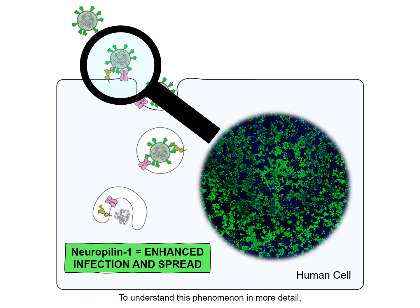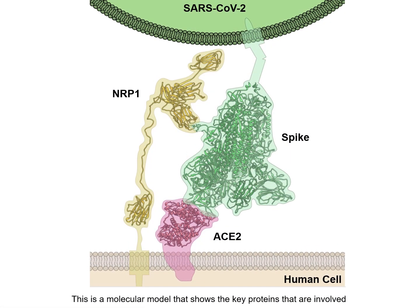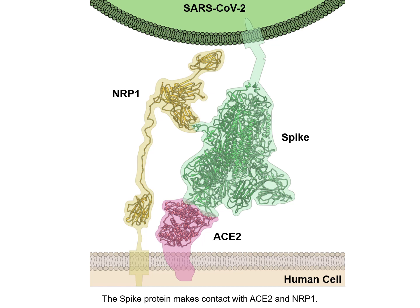To understand this phenomenon in more detail, we investigated the biochemical basis of the interaction between Neuropilin-1 and the viral spike protein. This is a molecular model that shows the key proteins involved in the interface between the virus and the human cell. The spike protein makes contact with ACE2 and Neuropilin-1, and these contacts enhance the entry of the virus into cells, where it then replicates to cause infection.